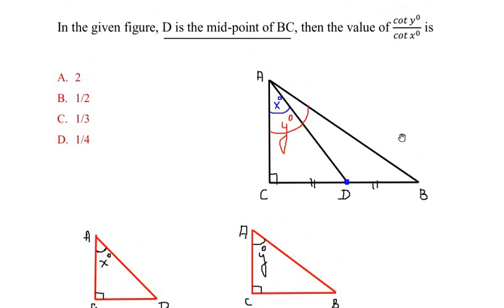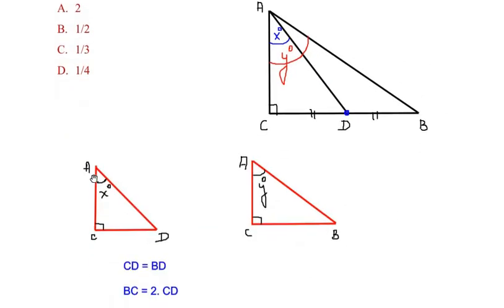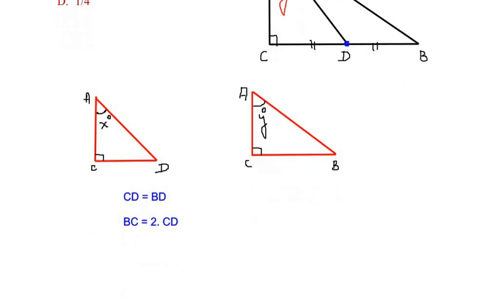Now first let us find out what is cot x degrees by making use of the triangle ACD. So we can write cot x as... So cot of x degrees is equal to adjacent side over opposite side.